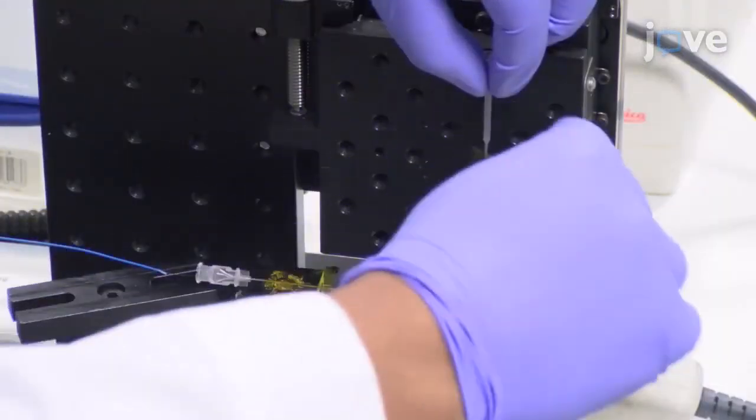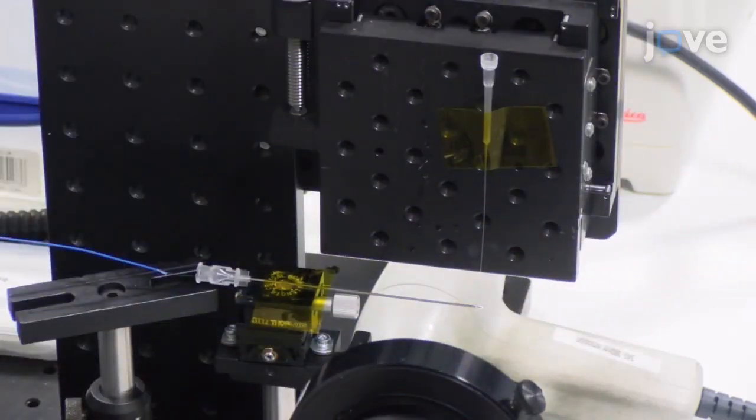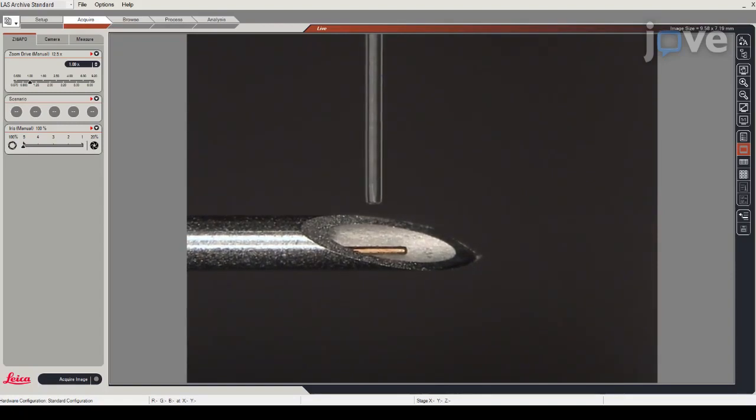Vertically affix a 20 microliter pipette to the vertical translation stage with the tip facing downward, and use both the horizontal and vertical translation stages to position the micropipette tip until it is adjacent to the fiber optic hydrophone at about 0.5 millimeters.